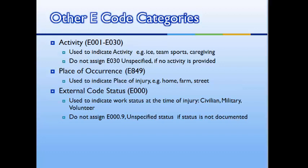In addition to the injury cause codes, E-codes are used to report the activity, place of occurrence, and work status at the time of injury.